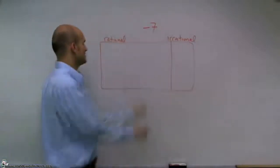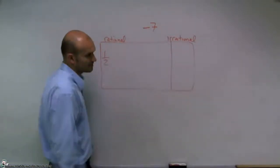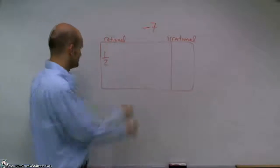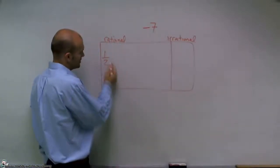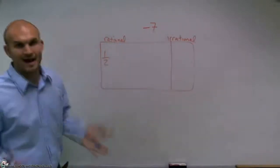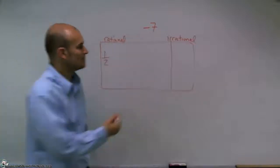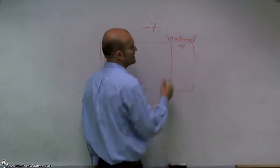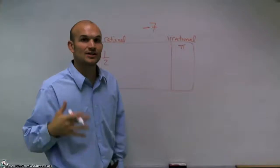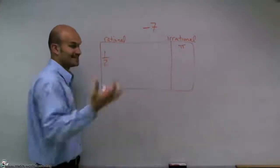So the main important thing about rational numbers is anything that you can rewrite as a fraction. So here's a rational number, 1 half. I can write it as a fraction. Irrational numbers are numbers that we cannot really write down the exact value on that sheet of paper. 1 half is the exact value.